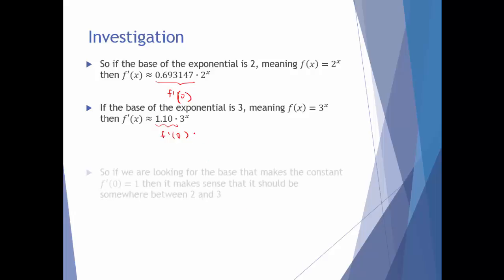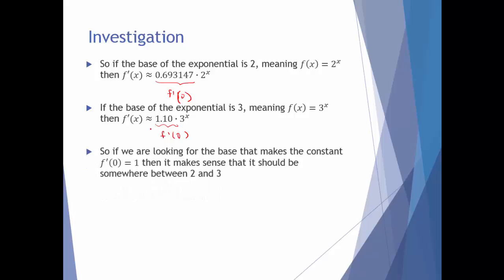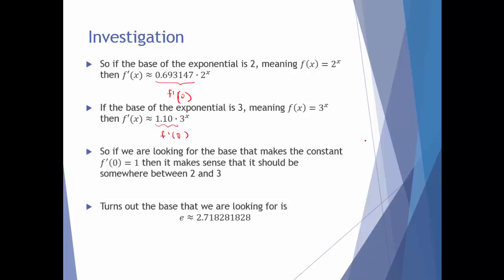When the base is 2, I got a number below 1. When the base is 3, I got a number larger than 1. So doesn't it make sense that the base giving exactly 1 should fall between 2 and 3? What number do we know that shows up really often in math and falls between 2 and 3? That's going to be e — approximately equal to 2.71 and so on. That's the base we're actually looking for.